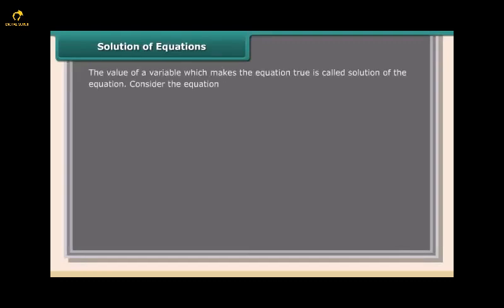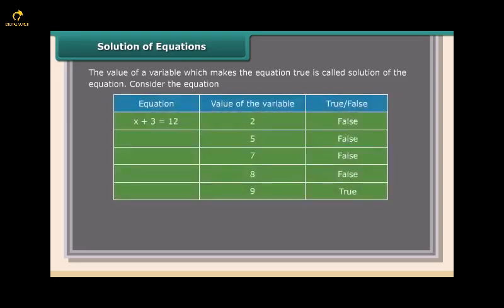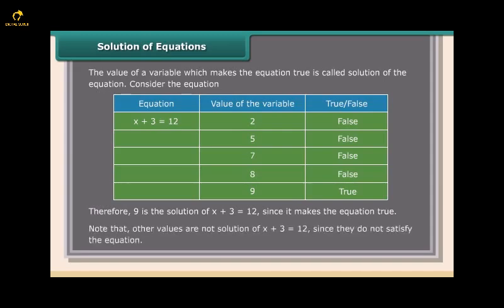The value of a variable which makes the equation true is called the solution of the equation. For example, 9 is the solution of x + 3 = 12 since it makes the equation true. Note that other values are not solutions of x + 3 = 12 since they do not satisfy the equation.